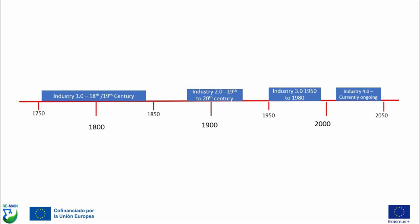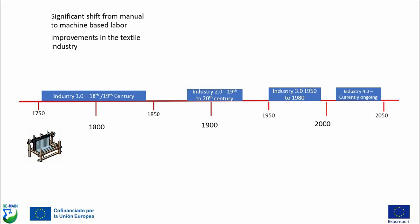Looking back at Industry 1.0, again known as the First Industrial Revolution, this was a period of significant social and economic change that occurred in the 18th and early 19th centuries. The primary drivers of this revolution were improvements in the textile industry. There was a significant shift from manual to machine-based labour, including the invention of the spinning jenny and power loom, which dramatically increased the efficiency and productivity of textile production. On top of that, you had the introduction of the steam train allowing new forms of transportation of goods and materials and also allowing the creation of new industries that previously hadn't existed.